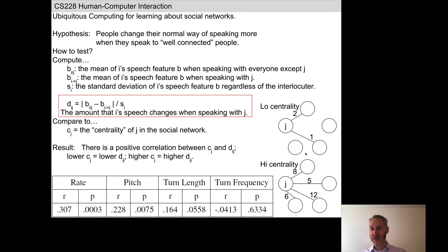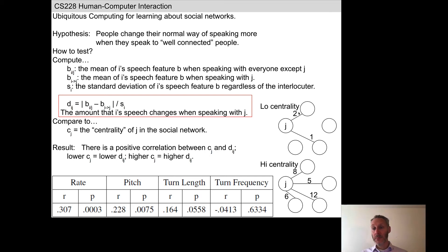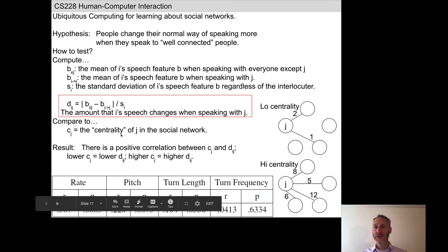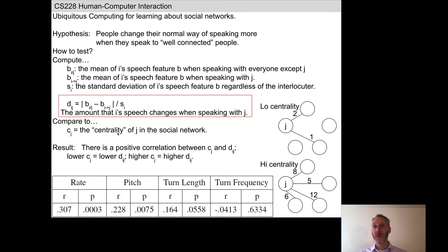The social network is a weighted graph where nodes represent graduate students and edges represent how many conversations that pair had. We go to J and sum up all the weights of edges connecting to J's node — that gives C_sub_J. One J might have a centrality metric of three; another J who had many conversations — eight with one person, five with another, twelve with another, six with another — would have a much higher C_sub_J. C_sub_J is the sum of how many conversations J had with everybody else — you can think of it as the sociality or extrovertedness of J.